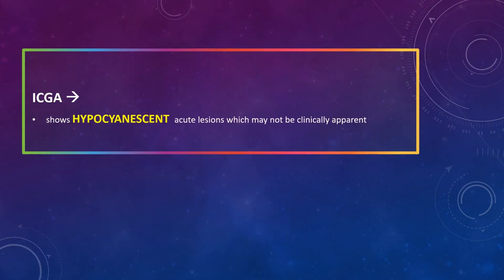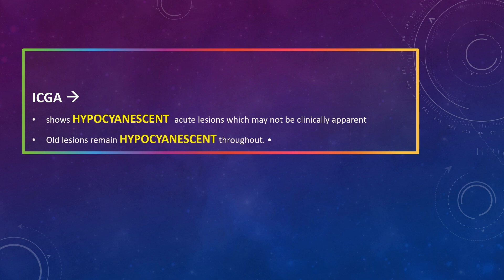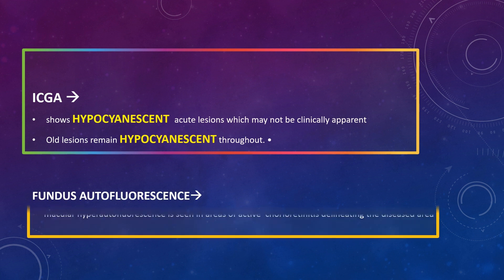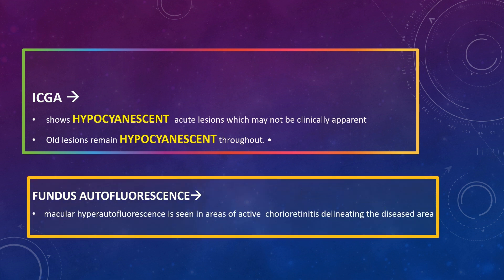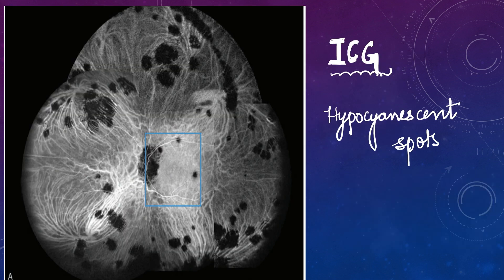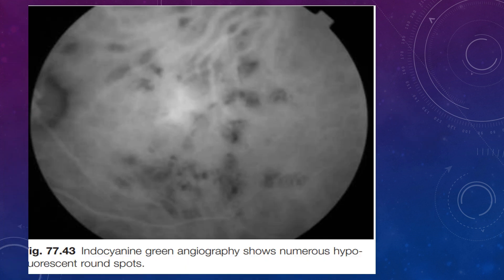On indocyanine green angiography, you will see hypocyanescent acute lesions which may not even be clinically apparent — they are more apparent on ICGA. Older lesions also remain hypocyanescent throughout. On fundus autofluorescence, you will see hyperautofluorescence in areas of active choroiditis. On ICGA, multifocal choroiditis lesions appear as hypocyanescent spots, as seen with numerous round hyposignaled spots in these images.